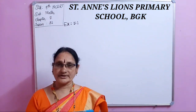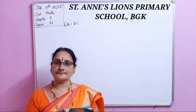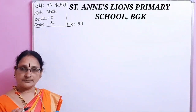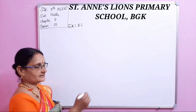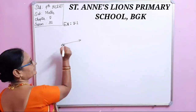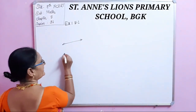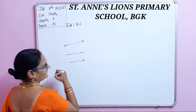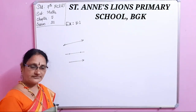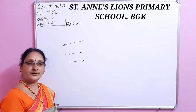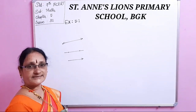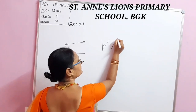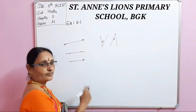I will recall your memory once and then go for Exercise 5.1. This is a straight line, this is a line segment, and this is a ray. Next comes complementary angles — the sum of two angles is 90 degrees. For example, if one angle is 30 degrees, its complementary angle is 60 degrees.